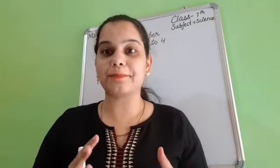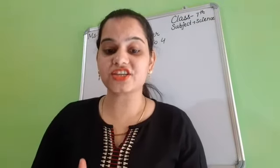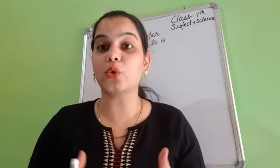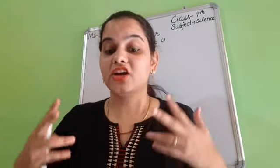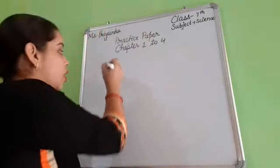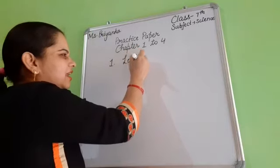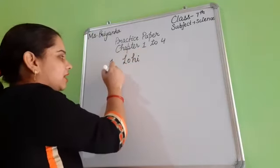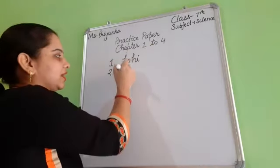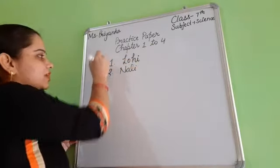Now let's do the C part — answer orally. First question: name two breeds of sheep found in India. Two breeds of sheep batani aapko joh India ke andar milti hain. So, there are several breeds — lohi, nali, bakharwal, patanwadi — but you need to give only two: lohi and nali. This is the first question.